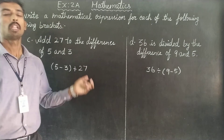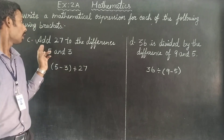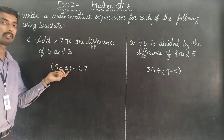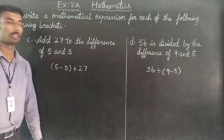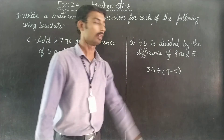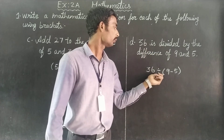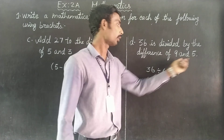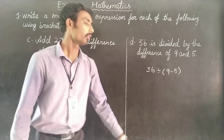So if you want to add 27 to the difference of 5 and 3: open bracket 5 minus 3 close bracket plus 27. And for the difference of 9 and 5: 36 is divided by the difference of 9 and 5, so 9 minus 5, open bracket 9 minus 5 close bracket. So this is the answer.